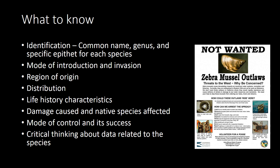In general, students should know the identification, the mode of introduction and invasion of each species, the region of origin and current distribution, life history characteristics, the damage caused, and the native species that are affected, as well as the mode of control and whether it's been successful. Students should also be able to critically think about data related to the species, and I have an example of that to show you.